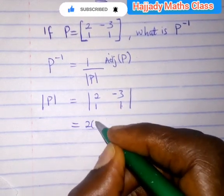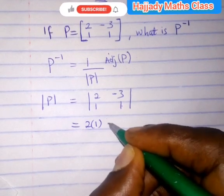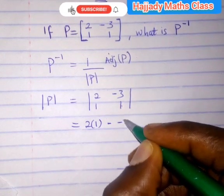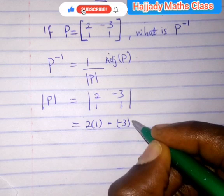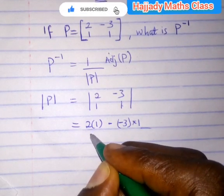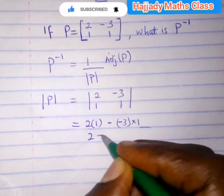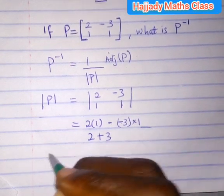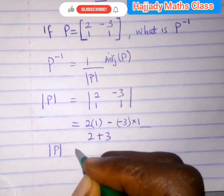So the determinant of this matrix will be equal to this multiplied by this minus this multiplied by this. That is, we have 2 multiplied by 1 minus minus 3. And this gives 2 multiplied by 1 is the same as 2, minus times minus gives plus 3. So the determinant of this matrix is 5.